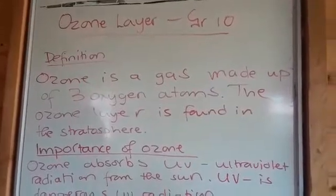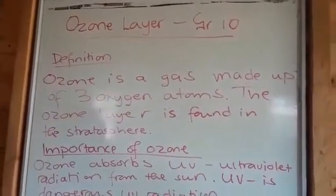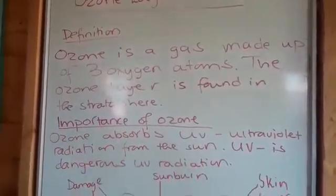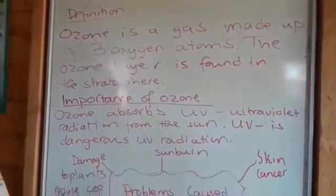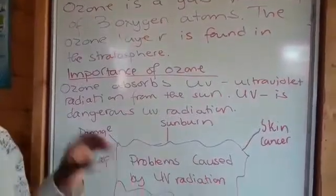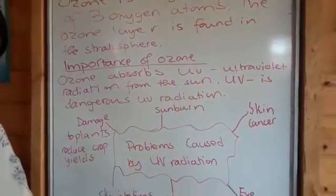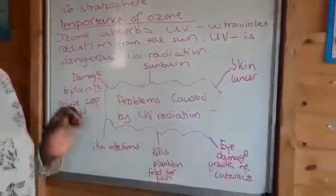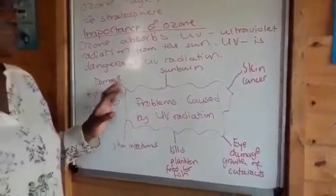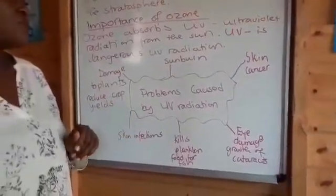Why is ozone important in the atmosphere? Ozone is important because it absorbs UV radiation, which we call ultraviolet radiation. This ultraviolet radiation is very dangerous in the atmosphere and causes problems for plants and also us human beings.